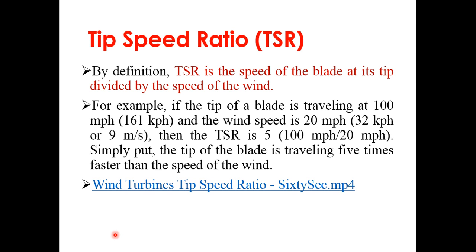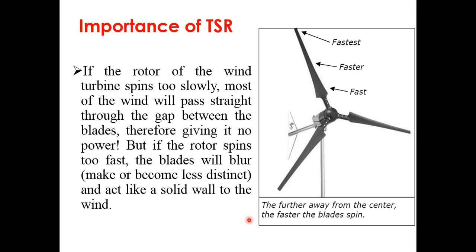The tip speed ratio is the speed of the blade at its tip divided by the wind speed. For example, if the tip of the blade is traveling at 100 miles per hour and the wind speed is 20 miles per hour — approximately 32 km/h or 9 m/s — then the TSR is simply 100 divided by 20, which equals 5. The blade tip is traveling five times faster than the wind speed.